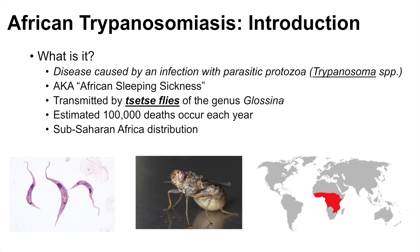Interestingly, this is also the distribution of the tsetse fly. So the tsetse fly's natural distribution is in the same area, and it also transmits the disease African trypanosomiasis in this area.